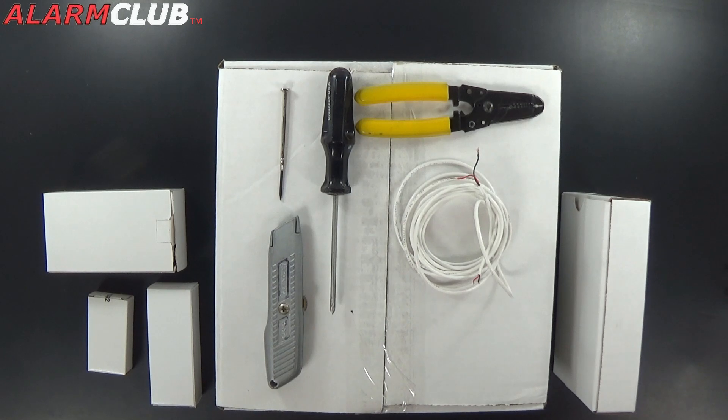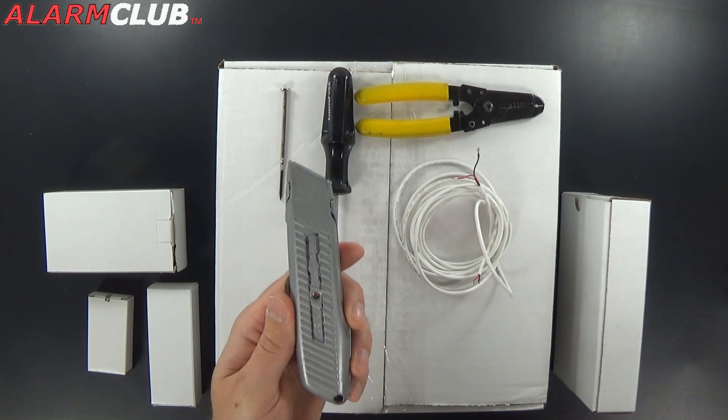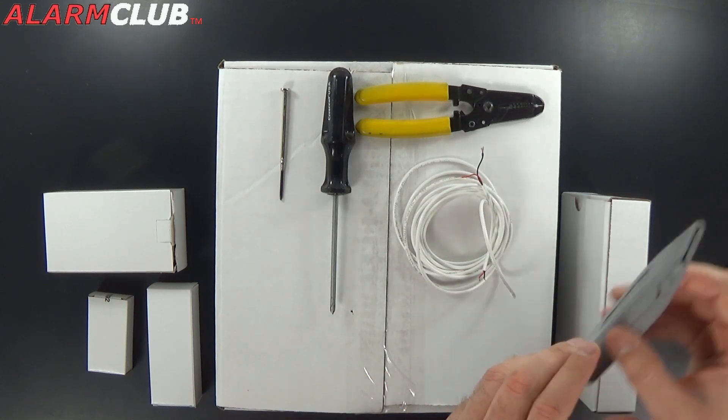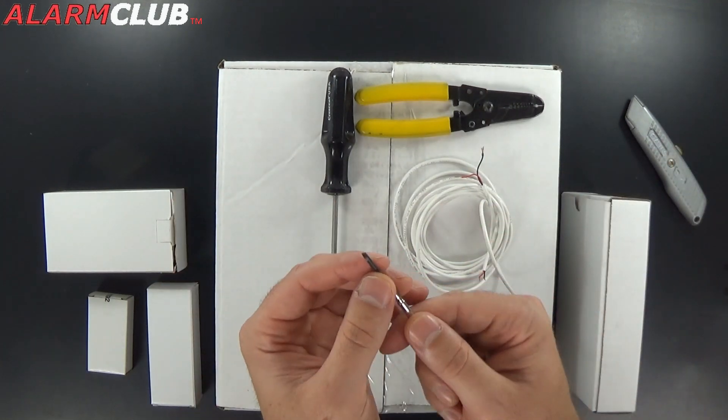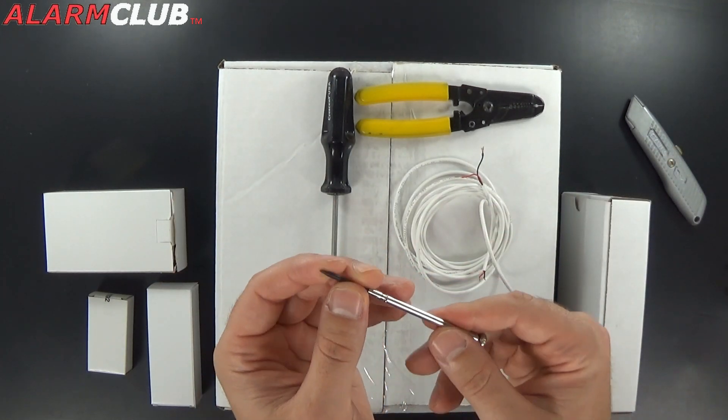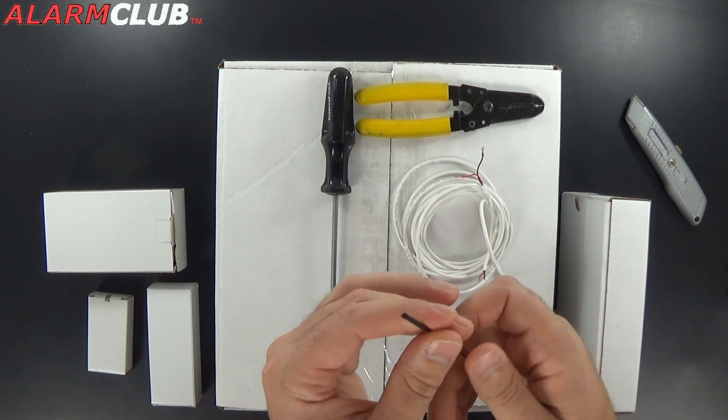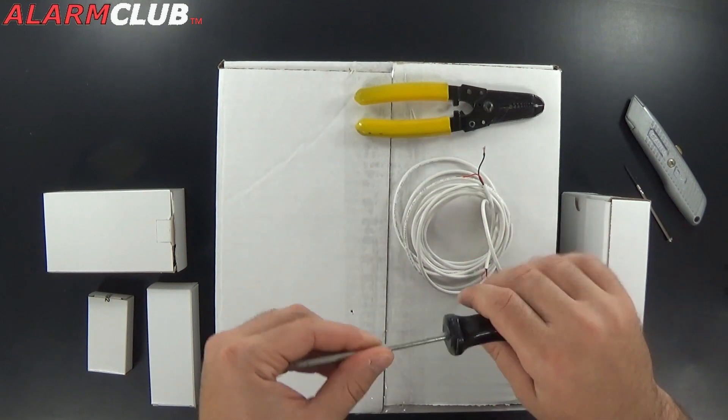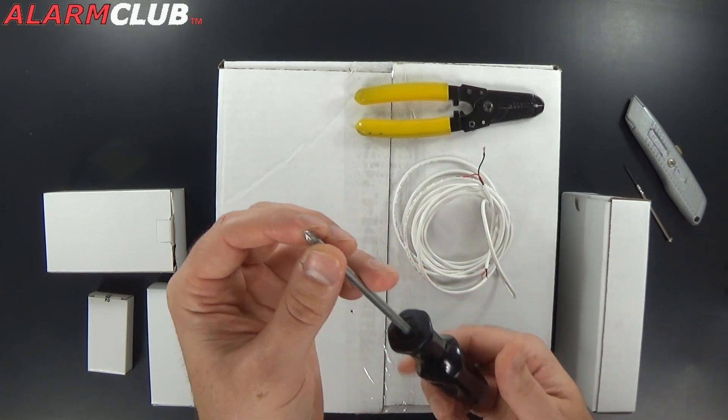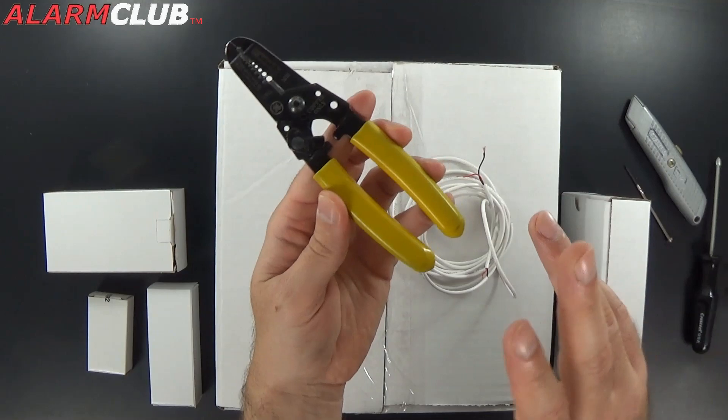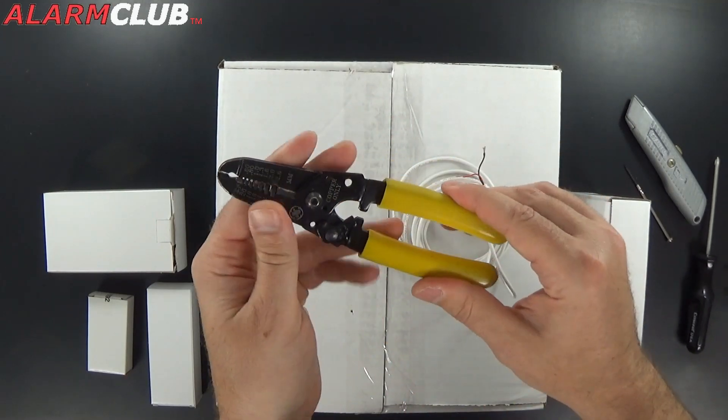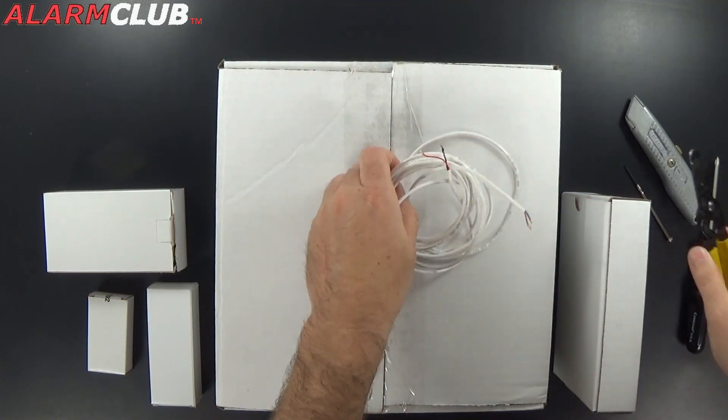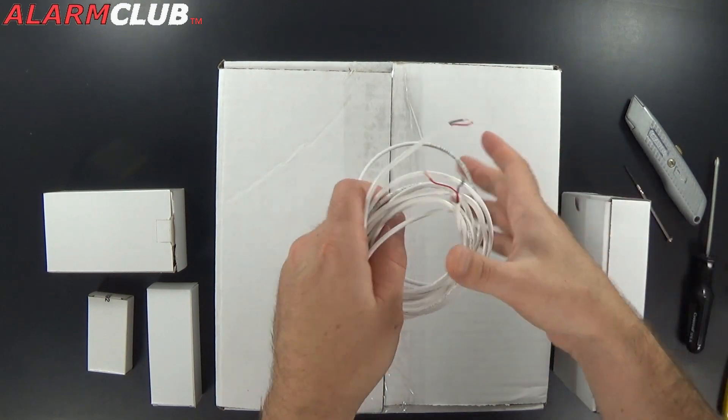Now to go over some of the tools that you're going to need that don't come with the package, you'll need a box cutter or some scissors in order to get the package open. You'll need a small flathead screwdriver in order to work with the power transformer and the terminals of the Lyric Security System. You'll need a Phillips head screwdriver, not too big. You'll need some wire strippers here in order to cut your 22 gauge by 2 wire.